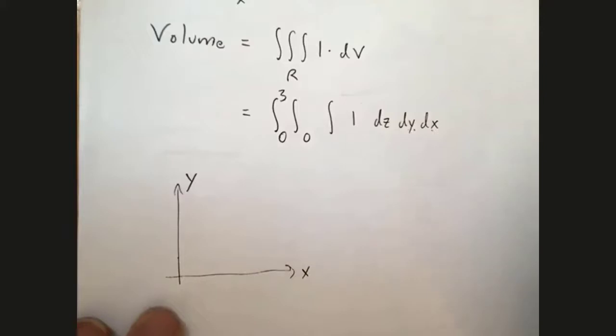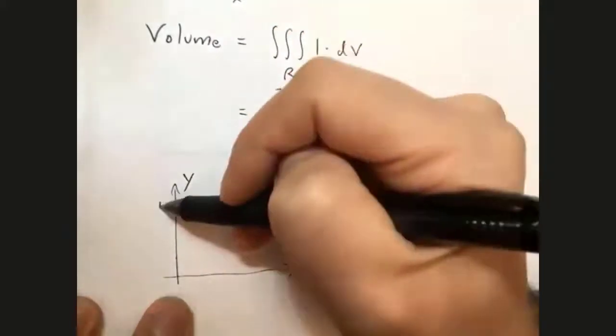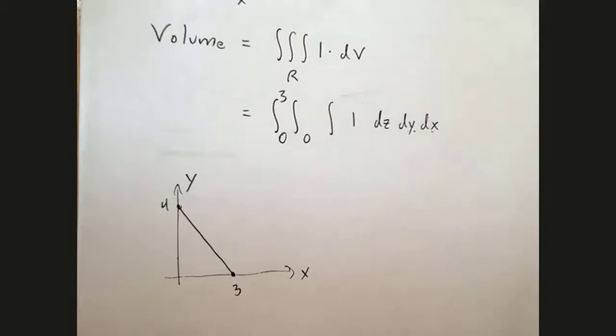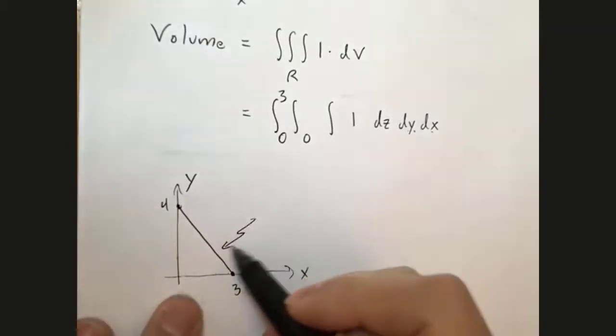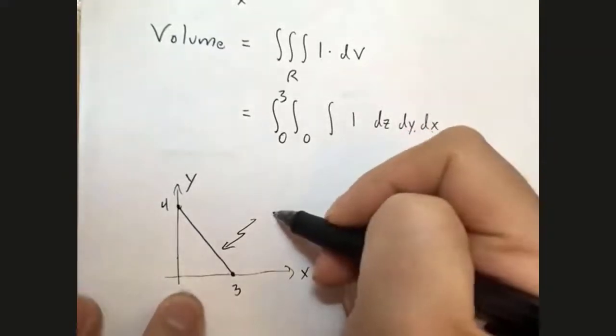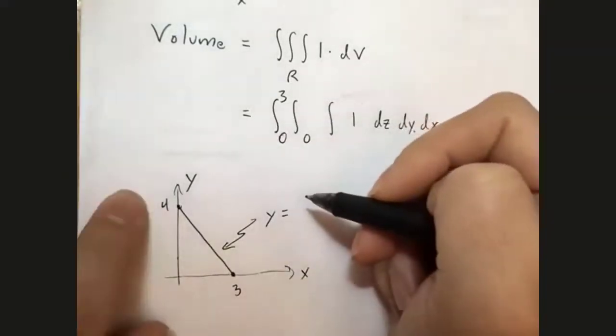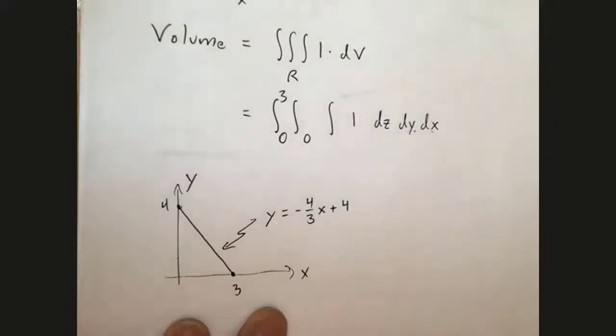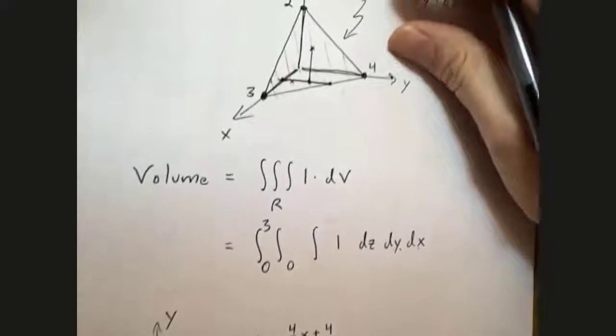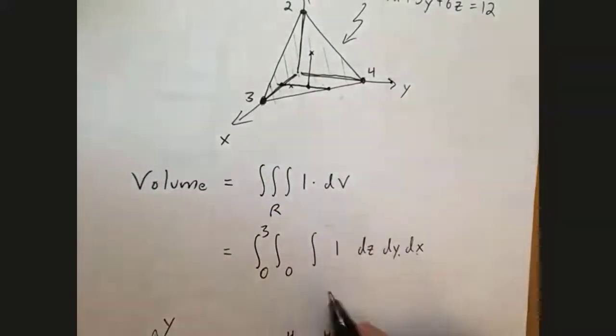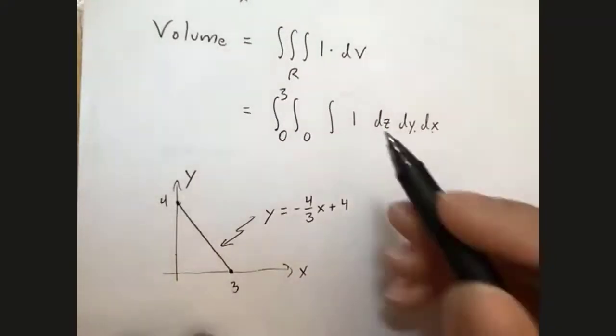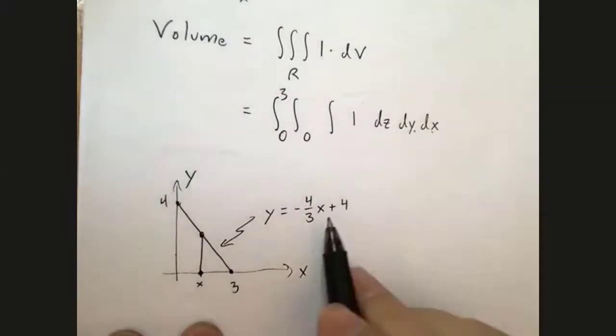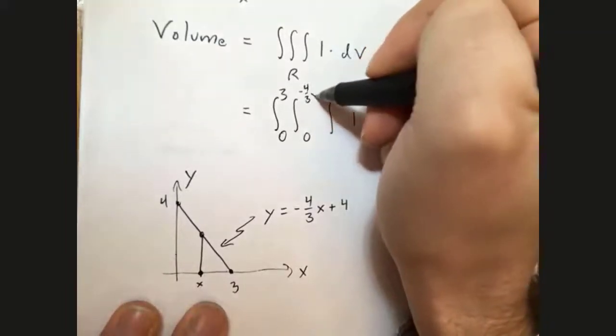I'm going to draw that line with y-intercept 4 and x-intercept 3. That's the same line, just looking at it from above in the xy plane. What function of x is this? Well, it's a straight line with slope negative 4/3 and y-intercept 4. That's what this line is represented by, and that's how high y goes. When I fix an x, y goes from here to here, up to this height. So I put here negative 4/3 x plus 4.